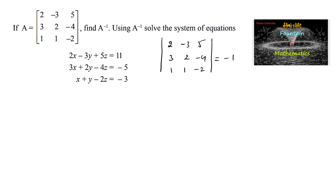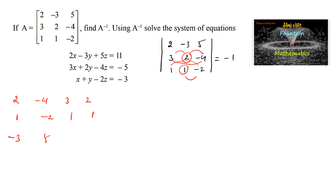Starting the shortcut method from the second row, second column: we write 2, -4, 3, 2. Moving to the third row starting from the middle: 1, -2, 1, 1. Then the first row: -3, 5, 2, -3. And coming back to the second row: 2, -4, 3, 2.